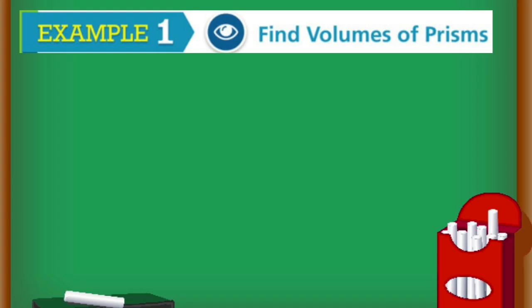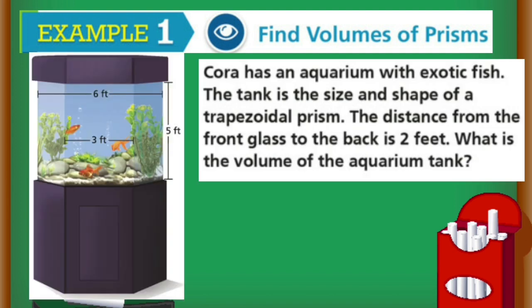Let's do example 1, Finding volumes of prism. Cora has an aquarium with exotic fish. The tank is the size and shape of a trapezoidal prism. The distance from the front glass to the back is two feet. What is the volume of the aquarium tank?